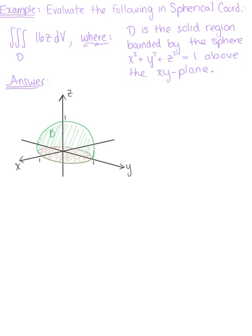Evaluate the following using spherical coordinates. We have the triple integral over D of 16z dV, where D is the solid region bounded by the sphere above the xy plane. We can see that it is bounded above by our sphere of radius 1, so that's x squared plus y squared plus z squared equals 1.